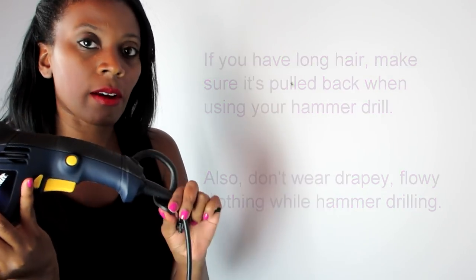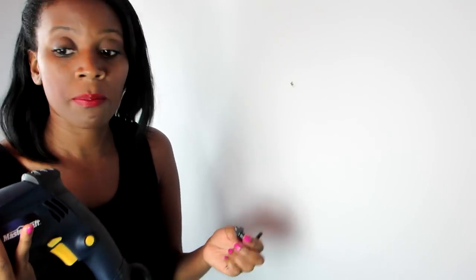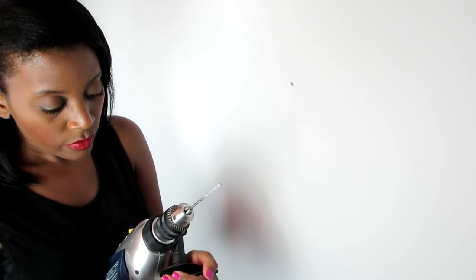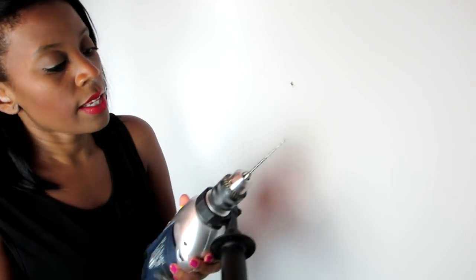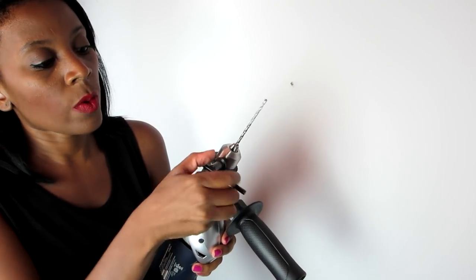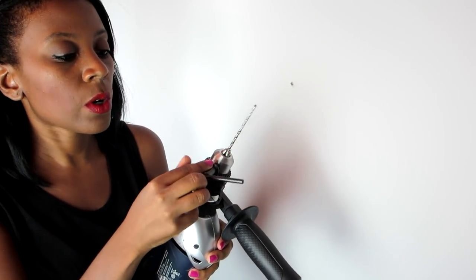Most times it's located here at the bottom towards the base or the handle. It might be in the actual container that you bought it from. What you want to do is get the key and put it in this little hole. You want to crank it lefty loosey to get it loose. So I'm turning it left.